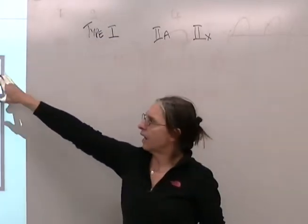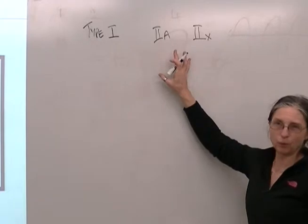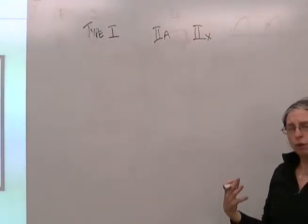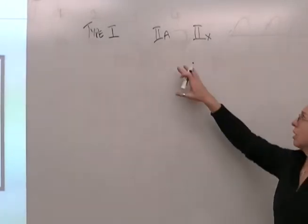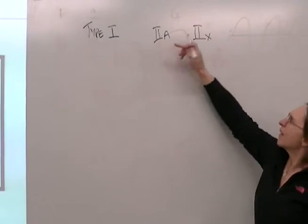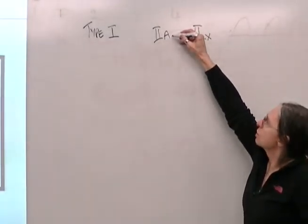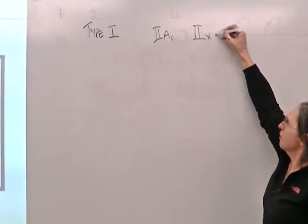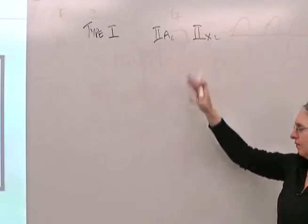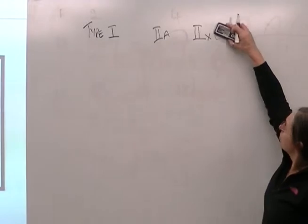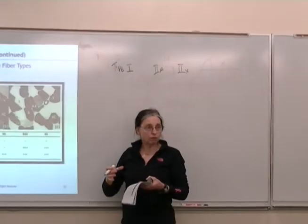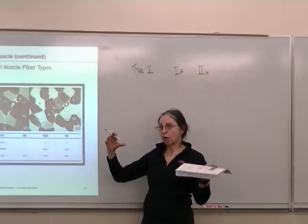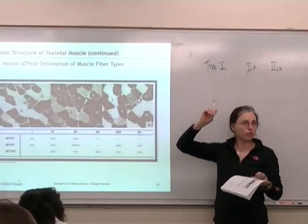When you look at the histochemical classification, there are some other subgroups, but the research on that is relatively new in humans. Most of the literature only uses these three groups — type 2A, type 2AC, and type 2X — though there are a couple of different mini-groups under there. These are our major muscle fiber types. A muscle is made up of lots and lots of different muscle fibers.